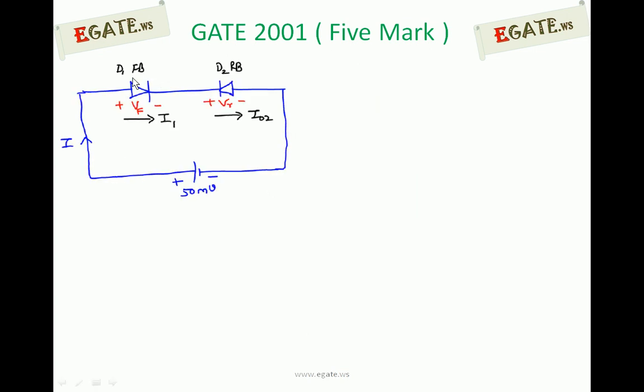Diode 1 is forward biased. Under forward bias, current flows always from P to N. So current flows from P to N in the direction indicated as I1. The voltage across it is plus minus VF. Since it is forward biased, it is indicated as VF.